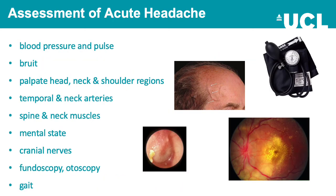Important things to think about when assessing someone with acute headache: measure blood pressure and pulse — particularly important for hypertensive encephalopathy — auscultate for bruits for cerebral and cardiovascular disease, examine the head, neck and shoulder regions for tension-type muscle spasm and osteoarthritis, assess the temporal and neck arteries for temporal arteritis and other arteritides and vasculitides, examine the spine and neck muscles for tension spasm, assess mental state for signs of encephalitis or meningitis, check cranial nerves, perform fundoscopy or otoscopy for dental and ENT causes, and assess gait for any signs of cerebellar disease.